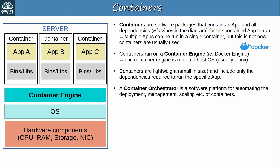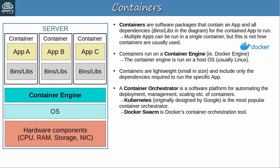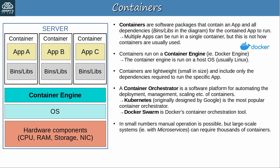A container orchestrator is a software platform for automating the deployment, management, scaling, etc. of containers. For example, you may have heard of Kubernetes, which is the most popular container orchestrator. Docker also has one called Docker Swarm. Why would we need a container orchestrator? In small numbers, manual operation of containers is possible, but large-scale systems — for example involving microservices — can require thousands of containers. That many containers cannot be realistically managed manually.